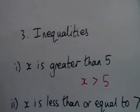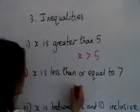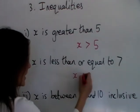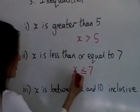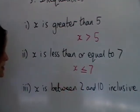The next one, x is less than or equal to 7, so x less than or equal to 7. So this time we are including the 7 and x is less than, so it's on the small side of the sign.